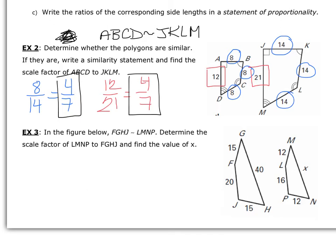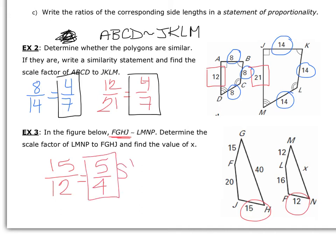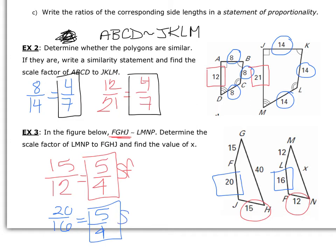In the figure below, determine the scale factor of LPMN to FGHJ and find the value of X. Since they're already telling us the polygons are similar, we match up a pair of sides: 15 over 12. Since FGHJ came first, we put that on top. Taking a 3 out of both gives us a scale factor of 5 over 4. We can check this: 20 over 16 also reduces to 5 over 4, confirming the scale factor.